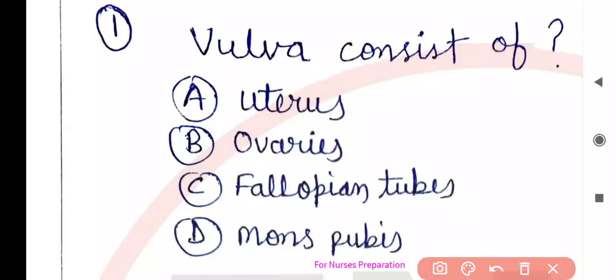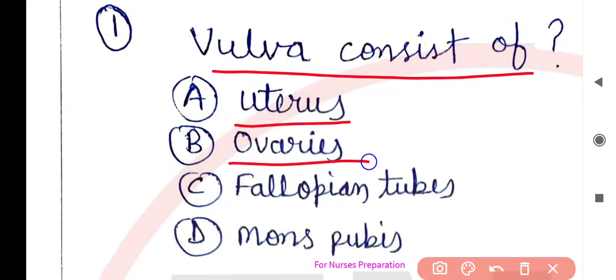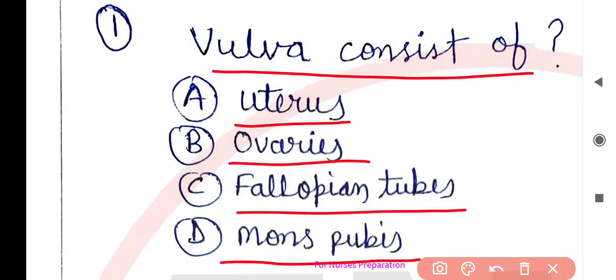Hello everyone, the question is: vulva consists of — vulva mein neeche bataye options mein se koun sa organ include kia jata hai? Option A: uterus, Option B: ovaries, Option C: fallopian tube, Option D: mons pubis.